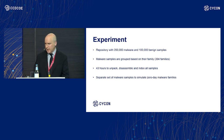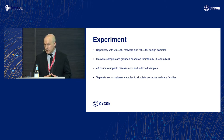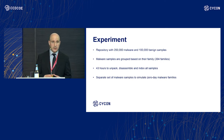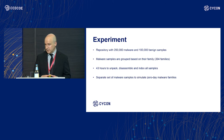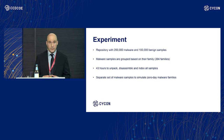We conducted an experiment using 200,000 malware samples and 100,000 benign samples. The malware samples were grouped based on their families — there were approximately 394 families. It took 43 hours to unpack, disassemble, and index all the samples. What takes most time is the disassembly because we rely on existing tools like IDA Pro and Ghidra, and we have no way to improve the disassembly time. To simulate unknown malware families — what we call zero-day malware families — we had a separate set of malware samples not included in our repository of known malware.